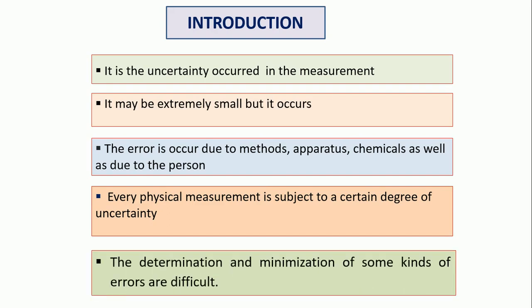The determination and minimization of some kinds of errors are difficult. Why this error occurs, so its determination is very difficult, and minimization of that particular error is again difficult. But some errors can be identified, can be rectified, and can be minimized. But some specific errors cannot be easily determined and cannot be easily minimized — they are a bit difficult to find out.